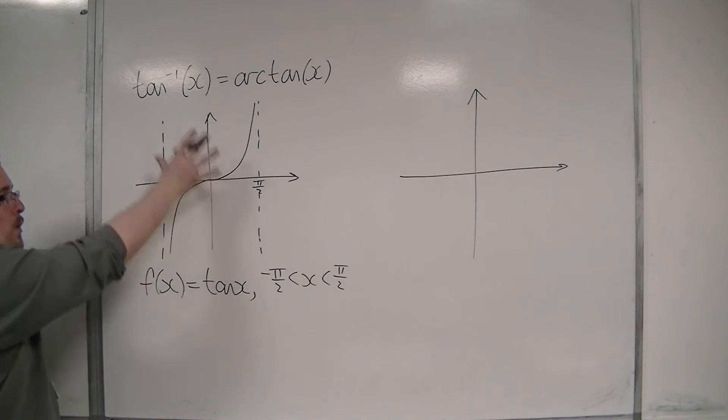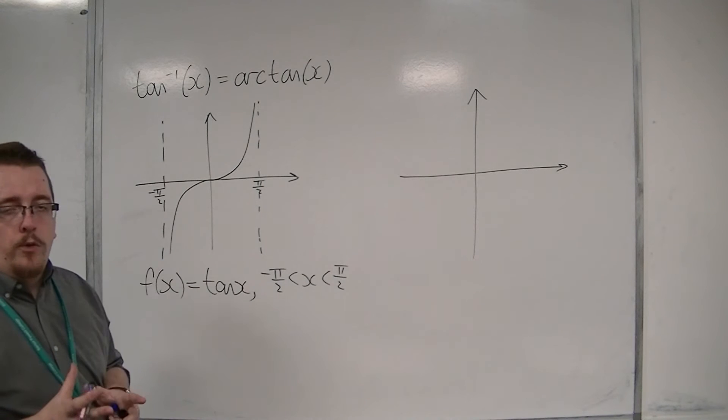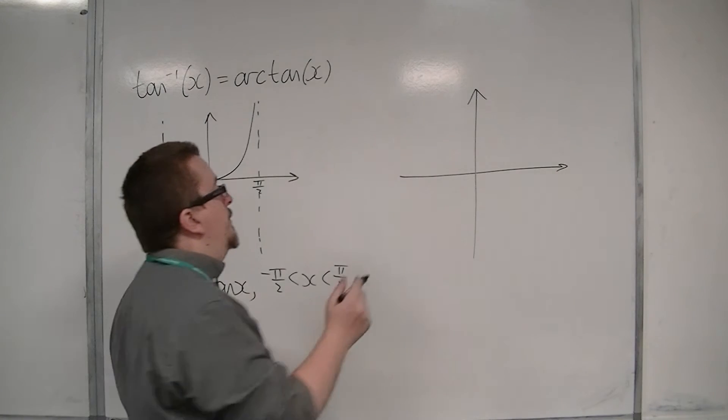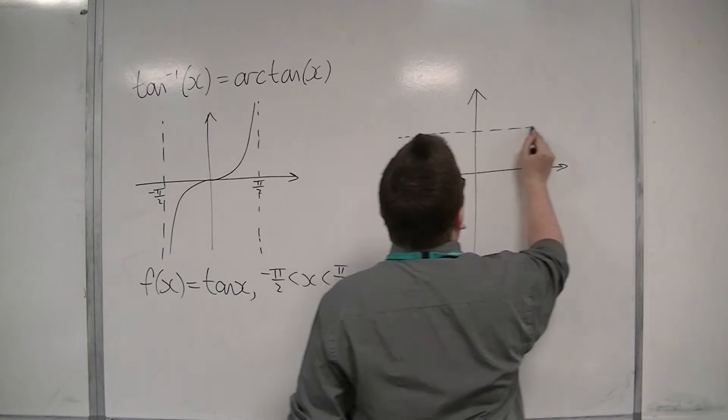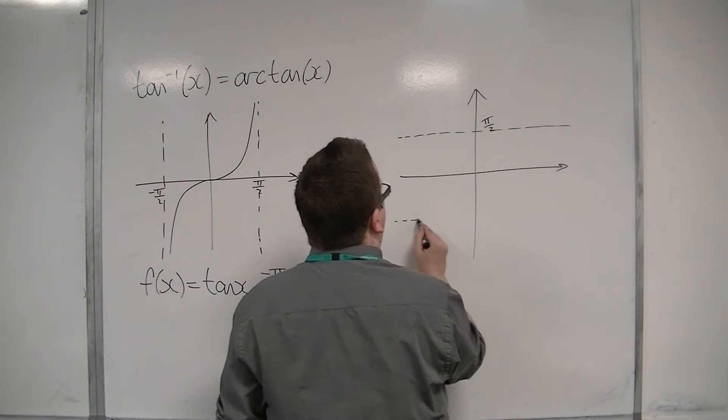Then because there were vertical asymptotes here, because these are also reflected in the line y equals x, these vertical asymptotes turn into horizontal asymptotes at pi over 2 and minus pi over 2.